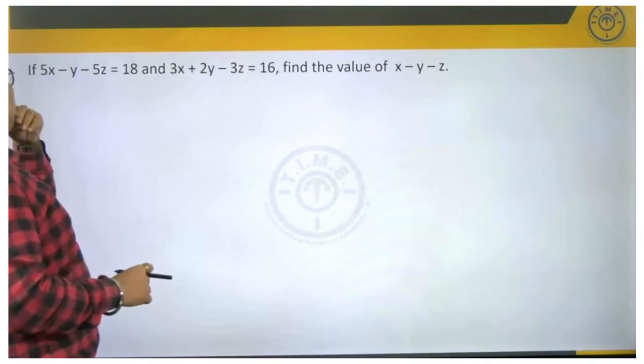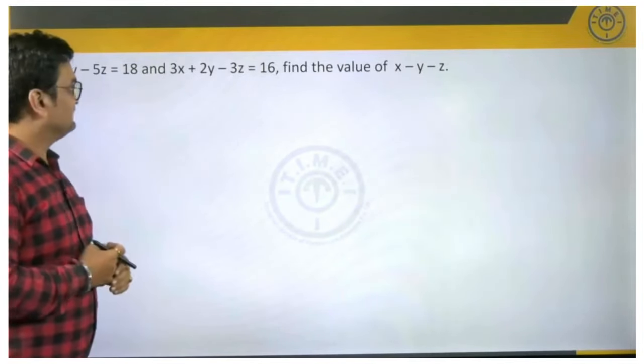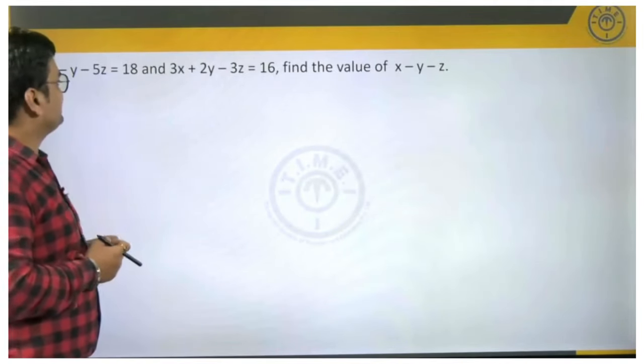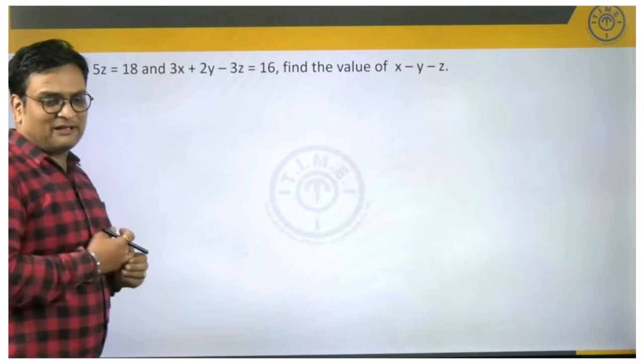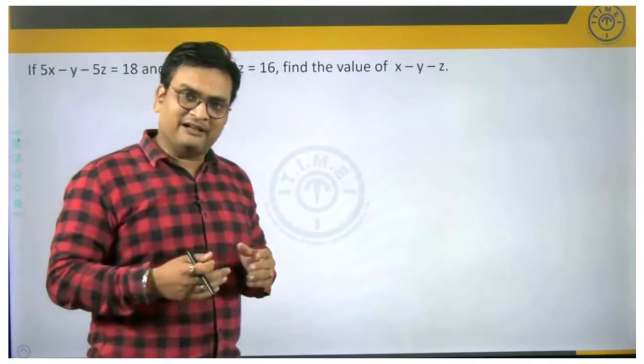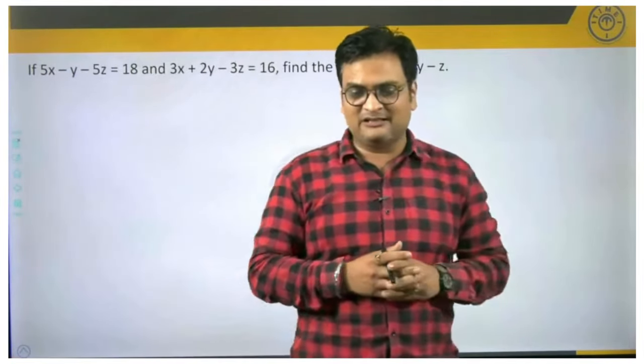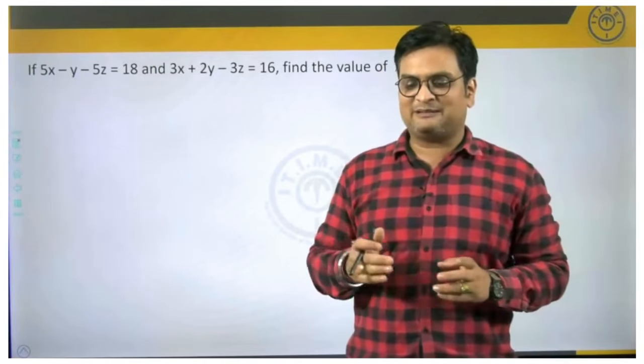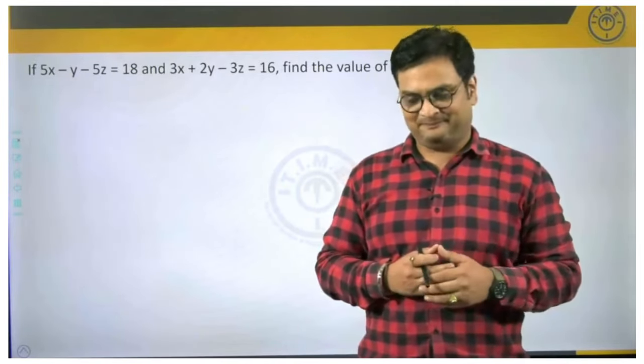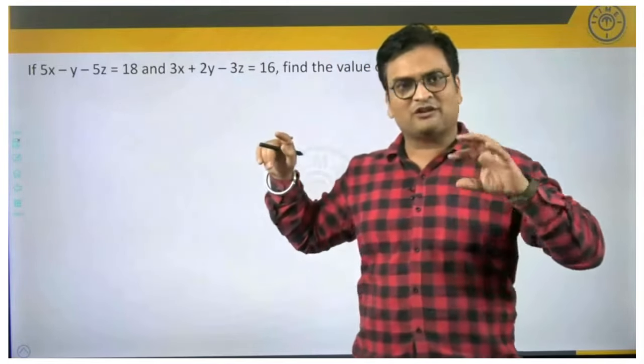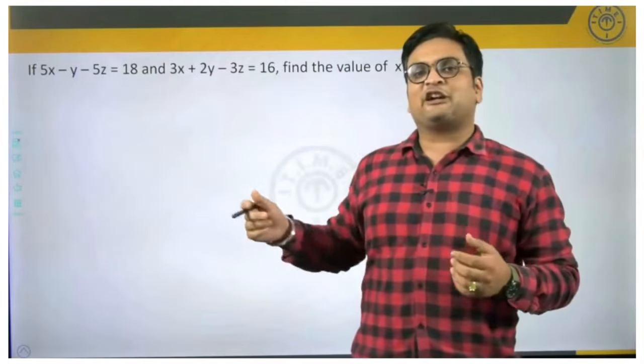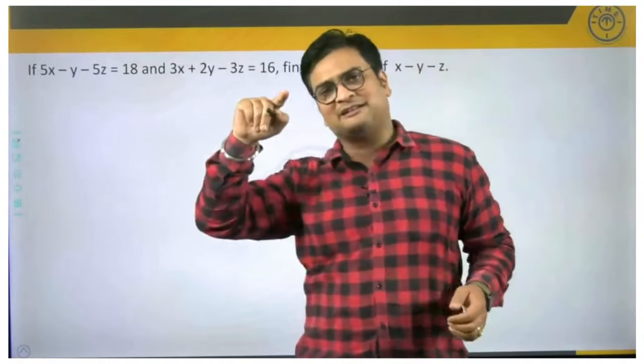The question is, if 5x minus y minus 5z is equal to 18 and 3x plus 2y minus 3z equal to 16, another equation involving 3 variables, then find the value of x minus y minus z. Please understand, he is not asking you to find the value of x or y or z. He is asking you to find a combination of the variables, x minus y minus z he says.